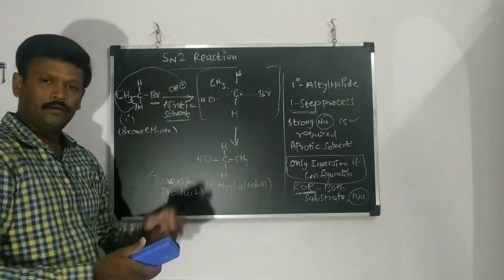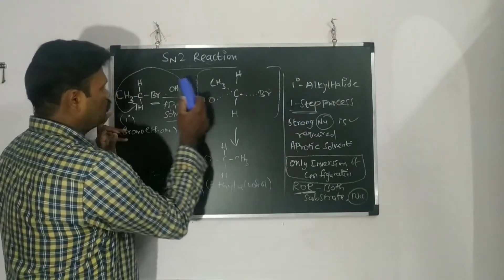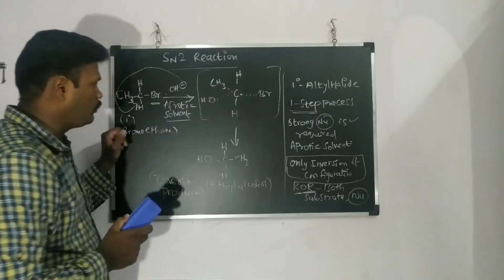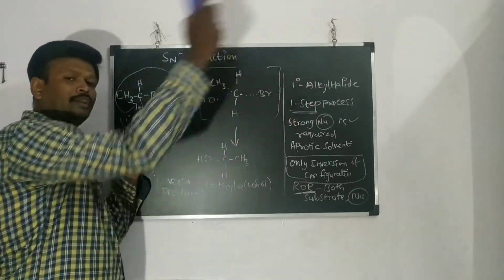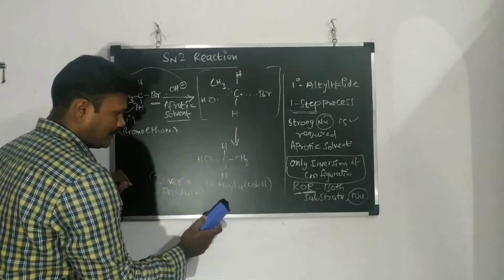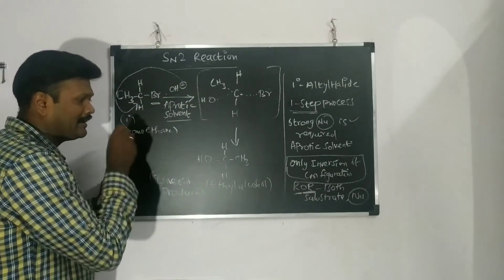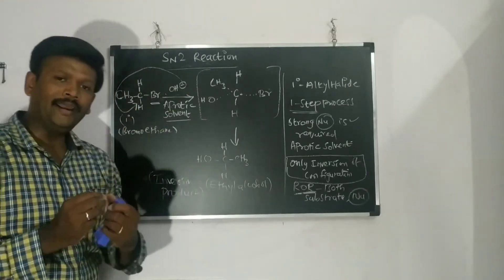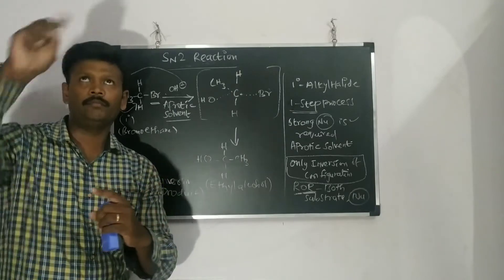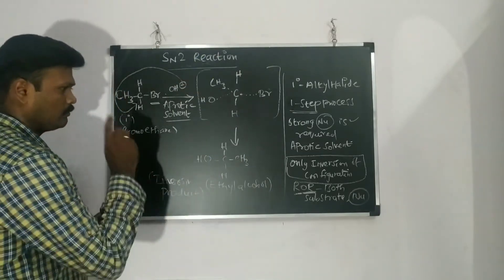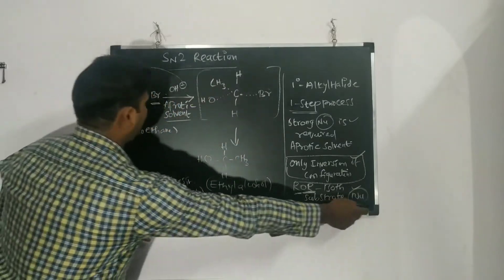To recap: in SN2, a 1° alkyl halide is used, it is a single-step process, a strong nucleophile is required, and an aprotic solvent is used so that the Br⁻ does not leave on its own and must be displaced by the nucleophile. Only inversion of configuration occurs because the nucleophile always attacks from the back side. In SN1, both inversion and retention of configuration occur because the carbocation intermediate can be attacked from either the front or the back side. In SN2, attack is only from the back side, giving only the inversion product. The rate of reaction depends on both the substrate and the nucleophile.